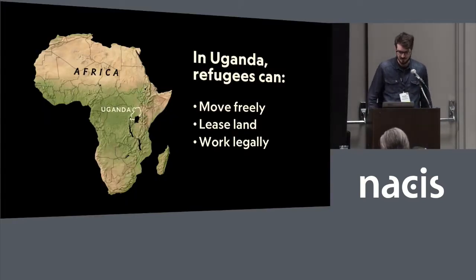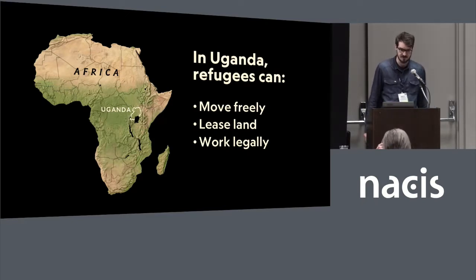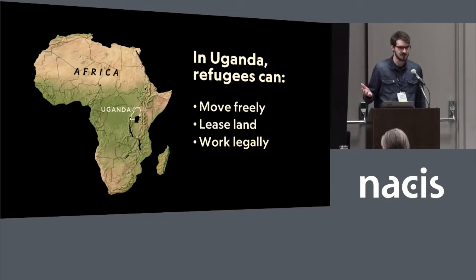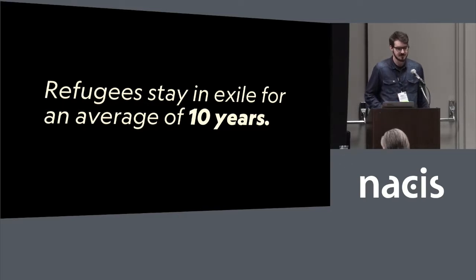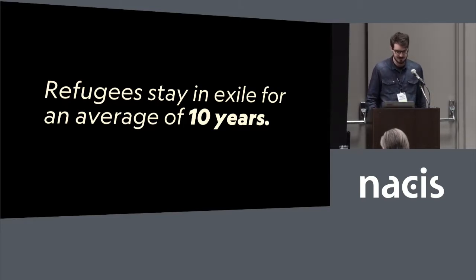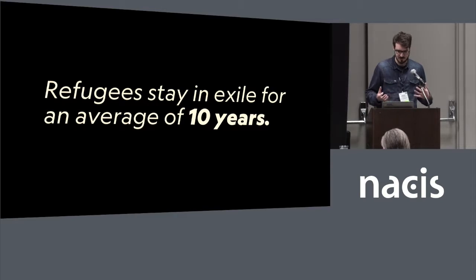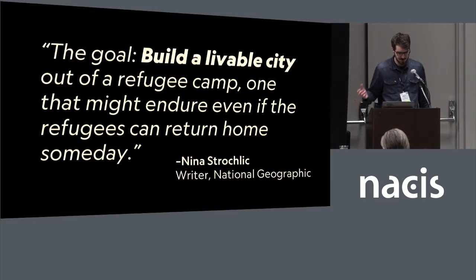Uganda is pretty unique when it comes to policy and refugees. In Uganda, refugees can generally move freely, they can lease land, and they can work legally. A lot of people have described these as very progressive policies that make it possible for refugees to earn an income and have a livelihood in their host country. Part of why these policies exist is the increasingly common finding that refugees often stay in exile for an average of 10 years. The writer Nina Strolic encapsulated the goal: build a livable city out of a refugee camp — one that might endure even if the refugees can return home.